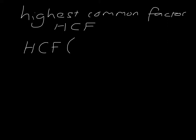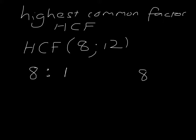If we're looking for the highest common factor of 8 and 12, let's start by finding all the factors of 8. We start with 1 and go to 2, 3, checking if those are factors. 1 is a factor and comes with its partner 8. 2 goes into 8 and comes with its partner 4. 3 is not a factor of 8. When we reach 4, we've already got it, so we've completed our list.